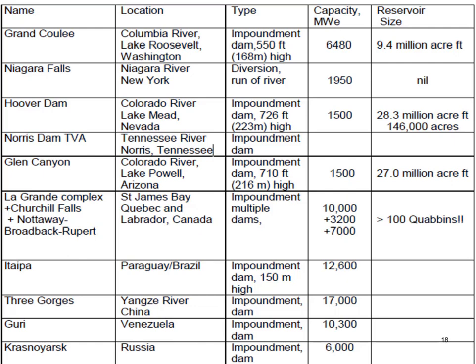Here is a list of some better-known hydroelectric facilities. Three Gorges Dam has a capacity of 17,000 megawatts, while Hoover Dam has a capacity of only 1,500 megawatts.